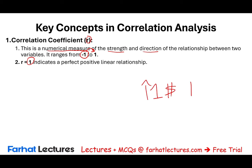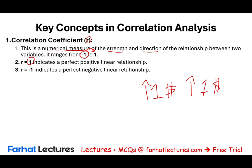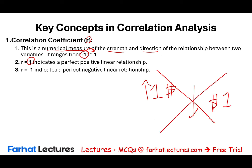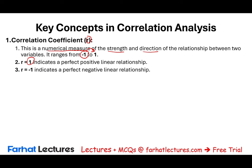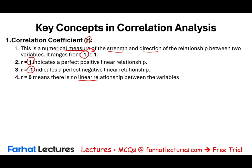If r equals one, there is a perfect linear relationship — one goes up, the other goes up. A negative r indicates a negative relationship: when one goes down, the other goes up. An r of negative one would mean for every additional dollar in advertisement, your sales go down by a dollar — not reasonable, but it illustrates that the two variables work in opposite directions. If r is closer to zero or zero, it means there is no linear relationship between the two variables.